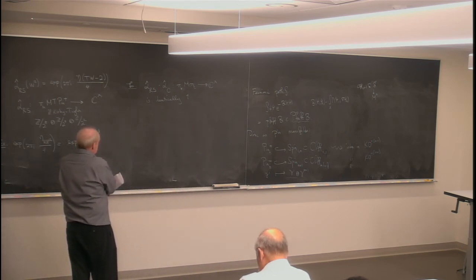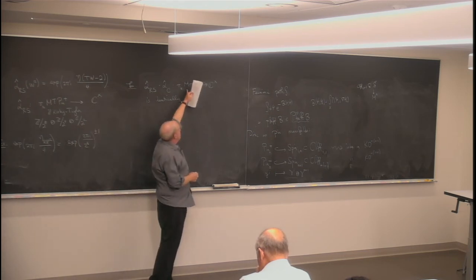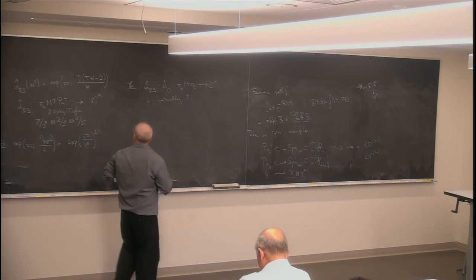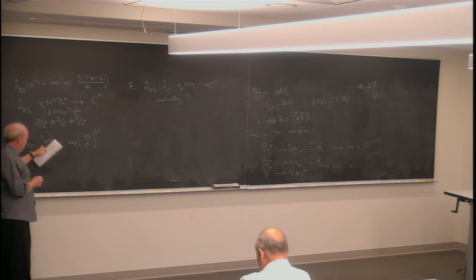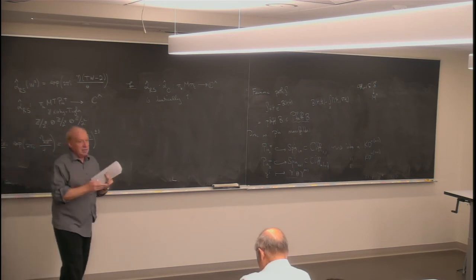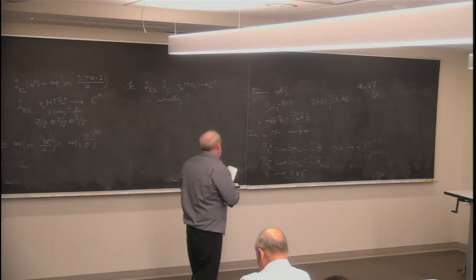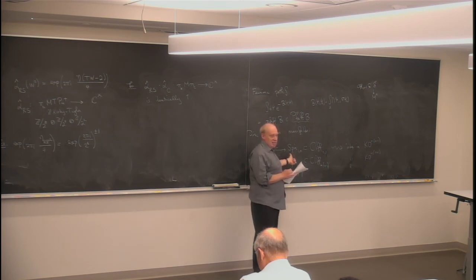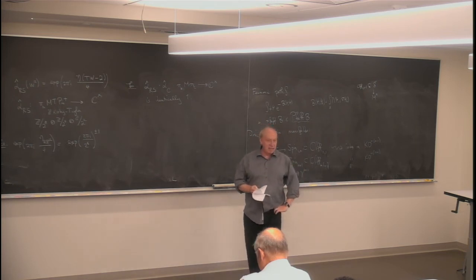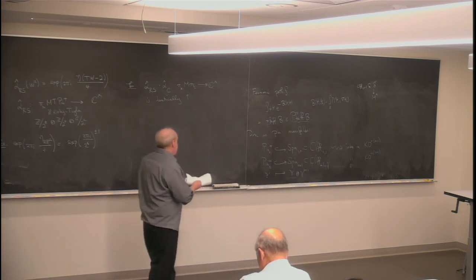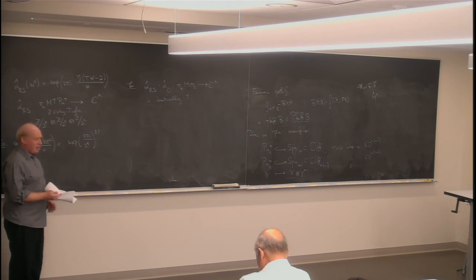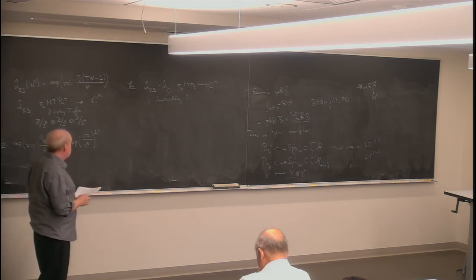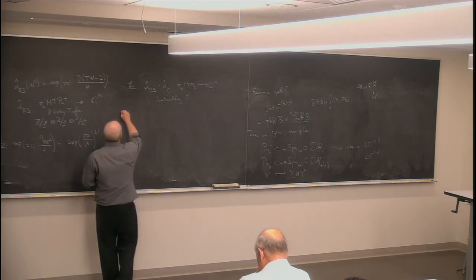Before showing the computation of generators, let me show the computation of an eta-invariant. This eta-invariant was introduced by Atiyah-Patodi-Singer in the 70s. Often it's a geometric invariant that moves with the metric — an analytic computation. In some spin cases it's a topological invariant, but there it's a mod-2 invariant. Here in the Pin case, it's still a topological invariant, but not mod-2, so you need other techniques.